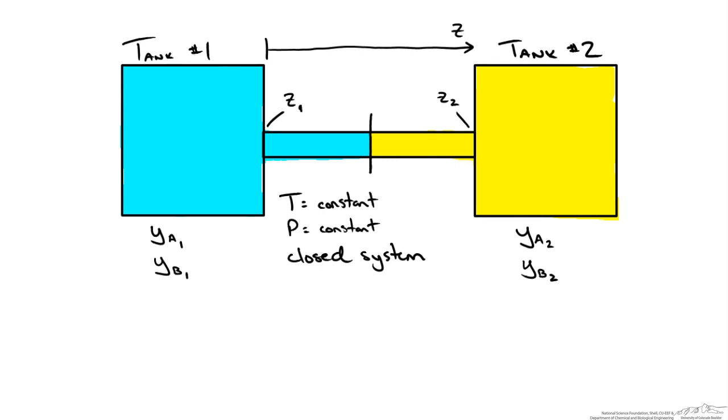We know that the temperature is constant for the system, that it is a closed system, and that the pressure is going to remain constant. I have defined positive z from left to right and we have two points of interest z1 and z2 which are the entrances to both tanks.